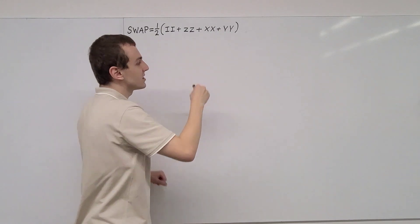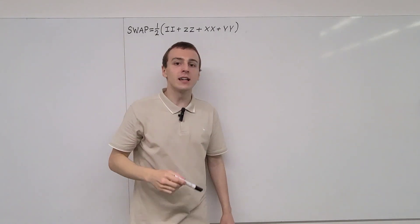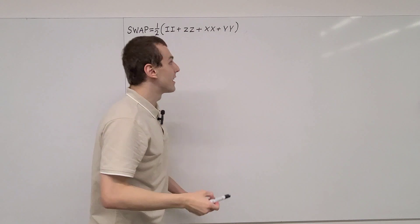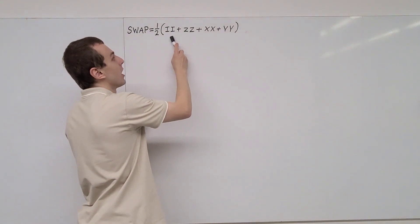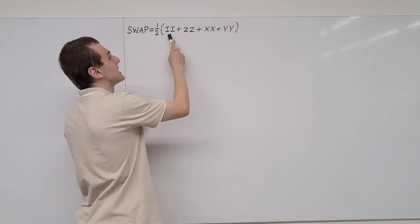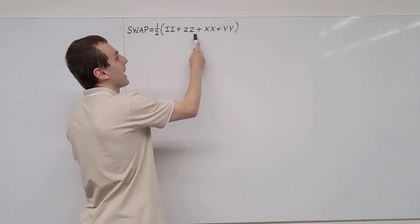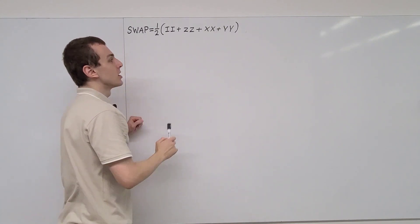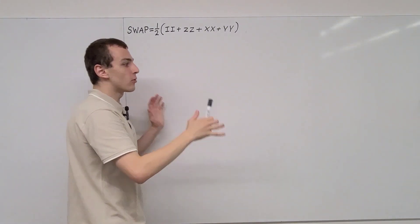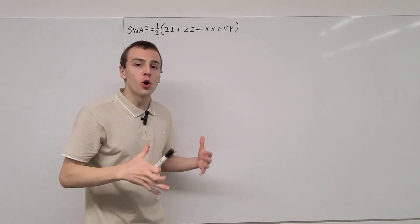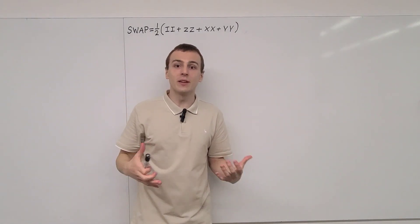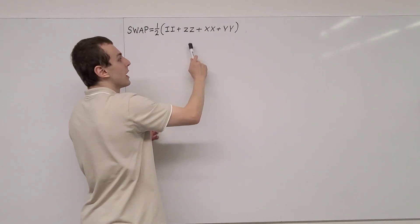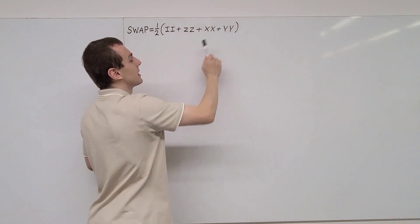The matrix representations in this video will be done in the two-qubit computational basis. The II and ZZ combinations are going to give diagonal matrices, while the XX and YY combinations are going to give anti-diagonal matrices. So they are four-by-four matrices, but the only non-zero elements will lie on the diagonal for the first two and on the anti-diagonal for the latter two.